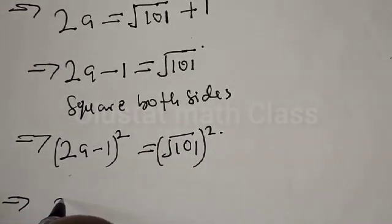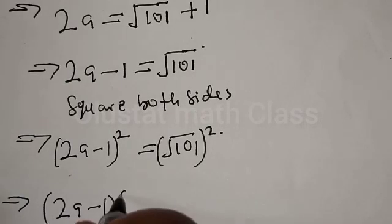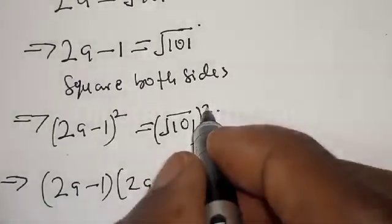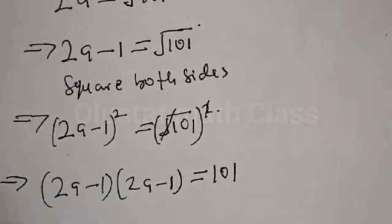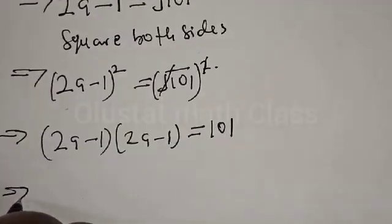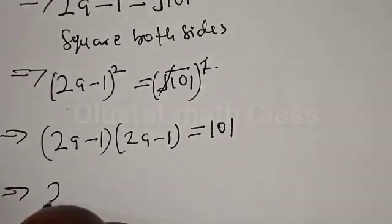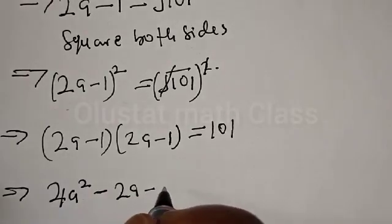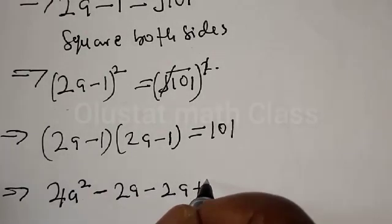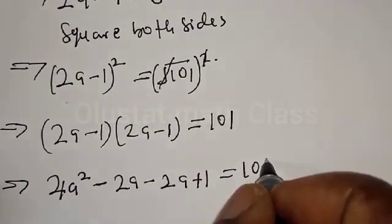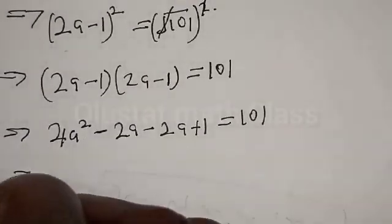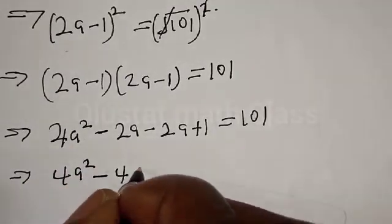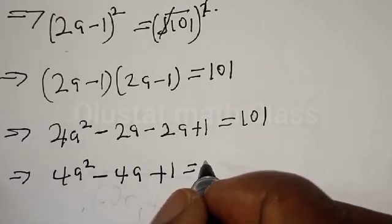This implies that 2a minus 1 into 2a minus 1, and the square root will cancel, giving us 101. Let's open this bracket: 2a times 2a gives 4a squared minus 2a minus 2a plus 1, equal to 101. Then we have 4a squared minus 4a plus 1 equal to 101.